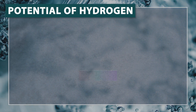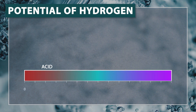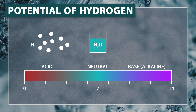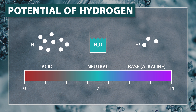pH is simply potential of hydrogen in a solution and will determine how acidic or alkaline a liquid is. The pH of pure water is 7 and is considered neutral. Highly acidic solutions will have a high concentration of hydrogen ions, and alkaline solutions will have a low concentration of hydrogen ions.